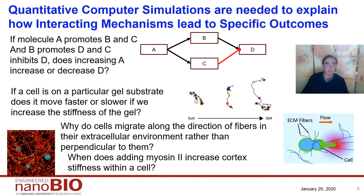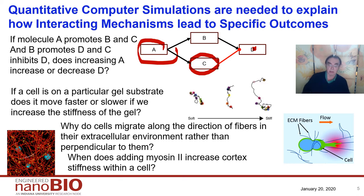Here's a trivial mechanistic example: molecule A gives B and C, and A and B promote D, but C inhibits D. What happens when you put it all together — does D get inhibited or promoted? You can answer that from a simulation. If you have a cell in a substrate, does it move faster or slower as you change the substrate? You can track the motion of cells, how they migrate along directions of fibers and not perpendicular to them. You can also study what happens when you add myosin to increase the cortex stiffness within a cell. There are lots of what-if experiments you can do with a digital twin.